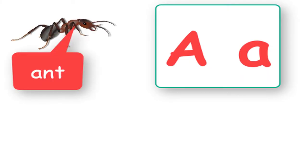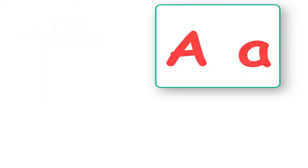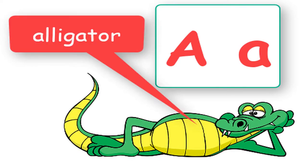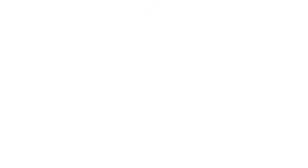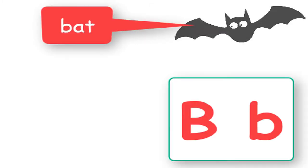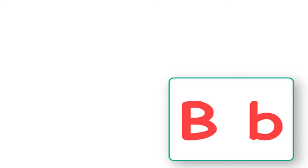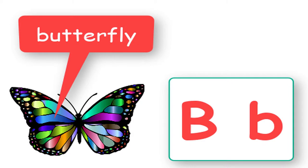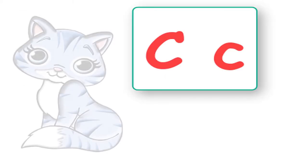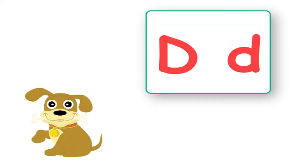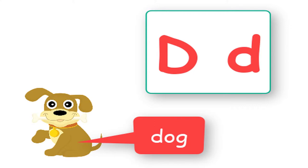A says ant, ant. A says alligator, alligator. B says bat, bat. B says butterfly, butterfly. C says cat, cat. D says dog, dog.